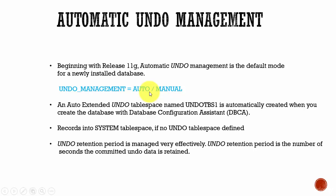The Oracle database provides fully automated management of undo information and the undo tablespace. Oracle automatically tunes the retention period so there is enough space in the undo tablespace to store the undo data. If your undo tablespace is created with the auto-extend option, the undo retention period is set a little longer than the longest running active query.